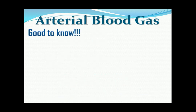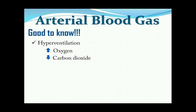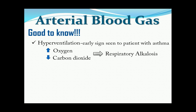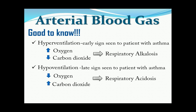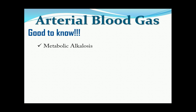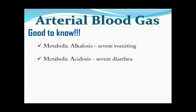Good to know. Hyperventilation: there is an increase in oxygen and a decrease in carbon dioxide that results to respiratory acidosis. Hyperventilation is an early sign seen in patients with asthma. Next is hypoventilation: there is a decrease in oxygen and an increase in carbon dioxide that results to respiratory acidosis. Hyperventilation is a late sign seen in patients with asthma. Number 3: metabolic alkalosis — it is an acid-base imbalance for patients experiencing severe vomiting. Metabolic acidosis — it is an acid-base imbalance for patients experiencing severe diarrhea. Lastly, respiratory acidosis is seen in patients with pulmonary emphysema.